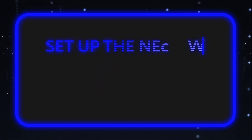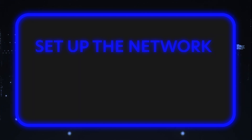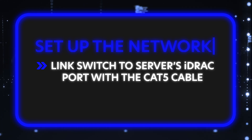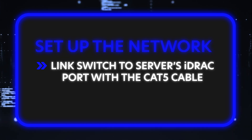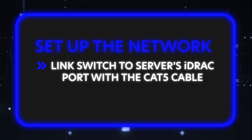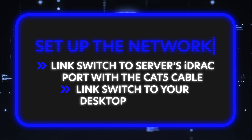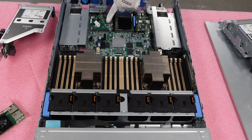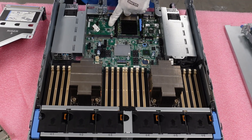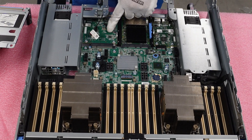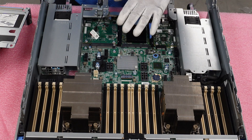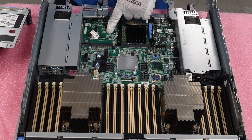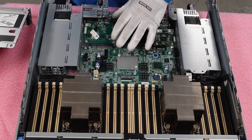Now we need to set up the network before we can do the upgrade. Set up your switch and run a Cat5 cable from the switch to the 15th Gen iDRAC port — note, this is not to the network port, it is to the iDRAC port. Run a second cable from the switch to your laptop or desktop. Here is an iDRAC card — this is actually removable. It's the same card regardless of the license; whether Express, Enterprise, or Data Center, you have the same physical card, but iDRAC is an actual removable physical card.